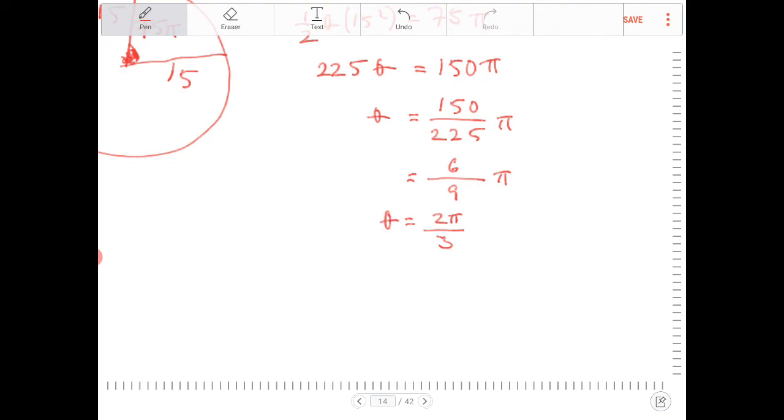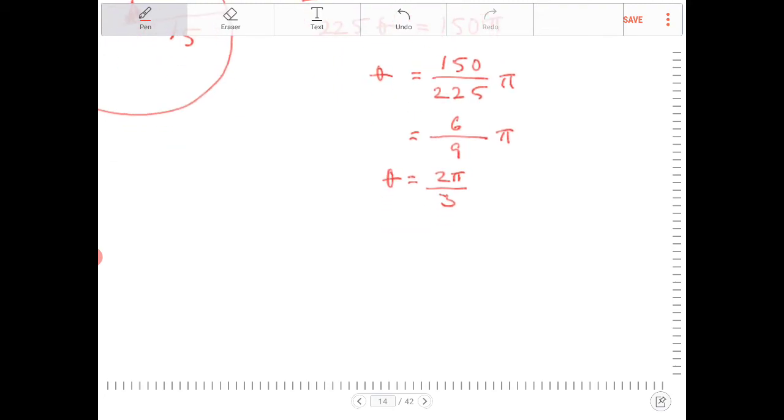So 2π over 3, I got to convert that back into degrees. So 2π over 3, the conversion is we're going to multiply this by 180 and divide by π.